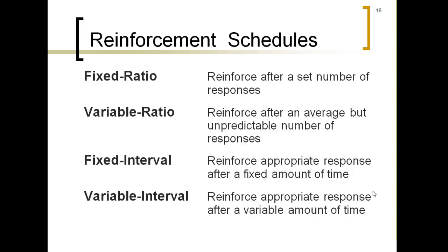These are types of intermittent reinforcement — you don't give the reinforcer every time, but you have a plan for how to give it. There are fixed and variable scales, and ratio versus interval scales. Ratio refers to behaviors; interval refers to time. With a fixed ratio schedule, you reinforce after a set number of responses — for example, a piece of candy for every three math problems. The person knows how many times they have to do the behavior before getting the reward.